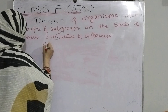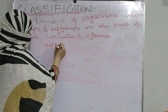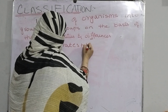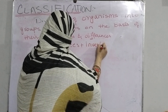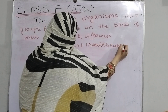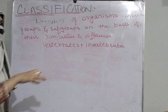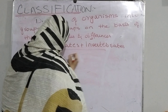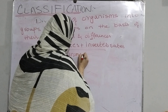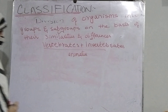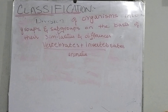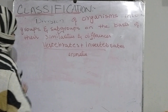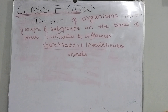We have two similarities in the kingdom of Animalia. But when we go further and study, we can see that in the vertebrates, we have a vertebral column.